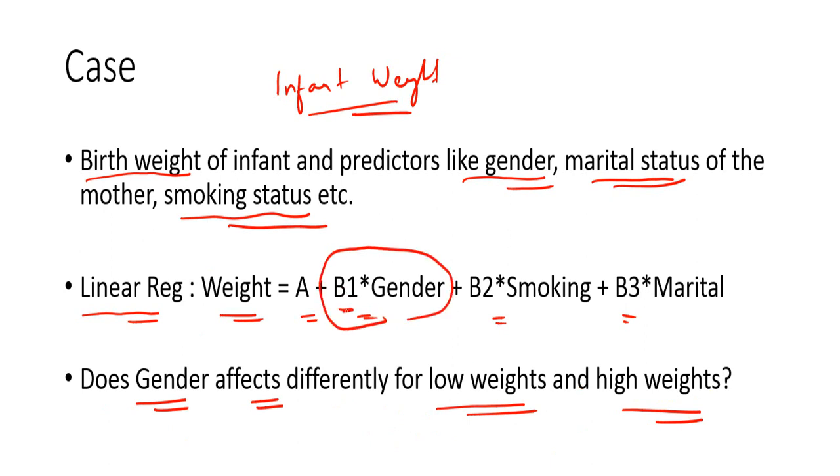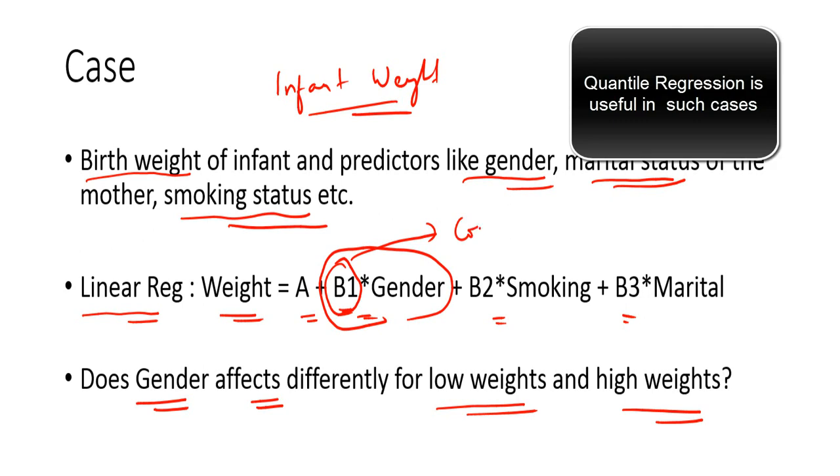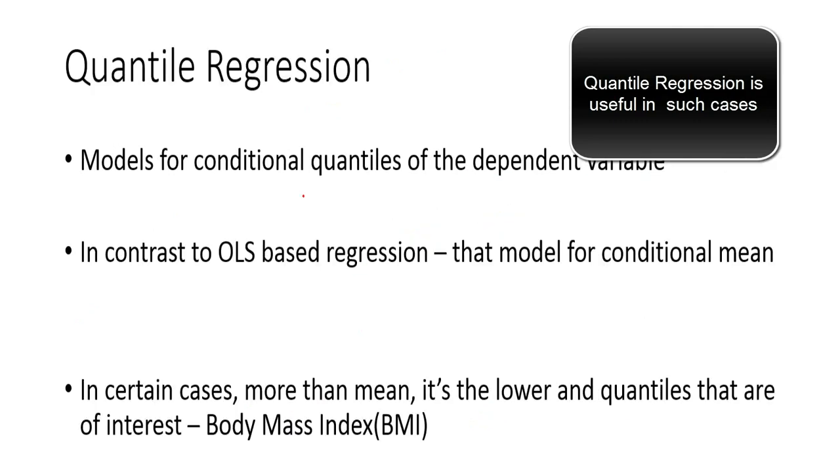Does the beta 1 value take a different value for lower percentile of the population and higher percentile of the population? In linear regression, that cannot be explained because beta 1 is always a constant in linear regression. So this is constant.